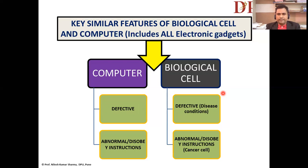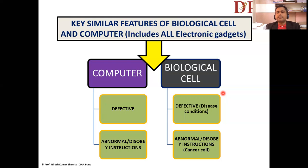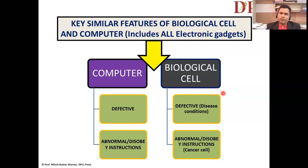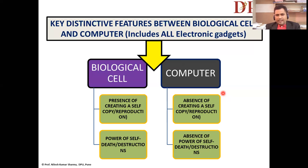Sometimes we say a computer is defective — and yes, a biological cell is also defective. Disease conditions in any organism are due to defects in the cell system. Similarly, sometimes a computer is abnormal and not working in the right direction. Our cells can also become abnormal, not following instructions given to the system. Cancer cells are one example where instructions given to the biological cell system are not fully complied with, turning the cell into a cancer cell.